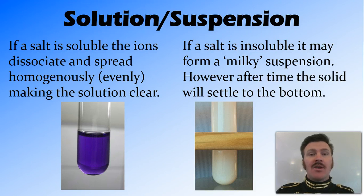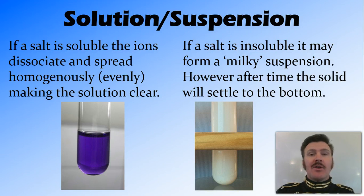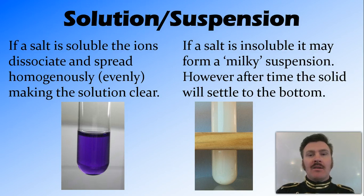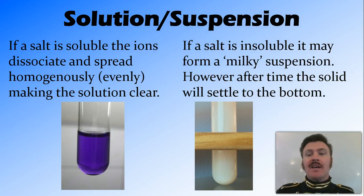For example, if you have a salt water solution — and when I say salt water, I mean sodium chloride — we have sodium chloride, which is the solute, in water, which is the solvent. The sodium ions and the chloride ions will dissociate and float freely around in that solution. A suspension, on the other hand, is what happens when a salt is not soluble, or insoluble.